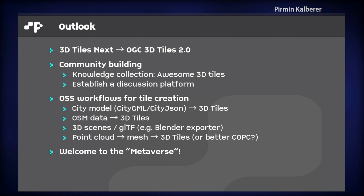The main workflows I'm thinking about are: having a CityGML model and creating 3D tiles from it; having OSM data and creating 3D tiles; having 3D scenes from a game engine or from Blender and wanting to export to 3D tiles. Blender already has a GLTF exporter, so maybe we should extend that. You could also use point clouds. The buzzword for all this is the metaverse — this 3D stuff is really an important part if you want to have augmented reality applications, and there will be people working on that. I think this is a really hot topic right now. Thank you.